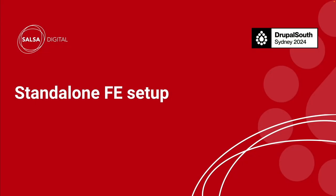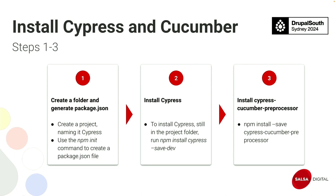Today we are talking about the standalone setup, which can run if we want to test only the front-end of a site — not the back-end — and we want to set it up. How do we do that for any site? There are majorly four steps, and the first three are mentioned here.